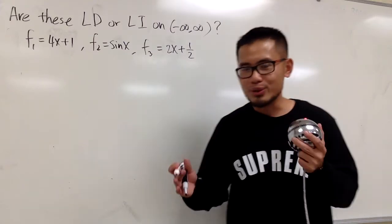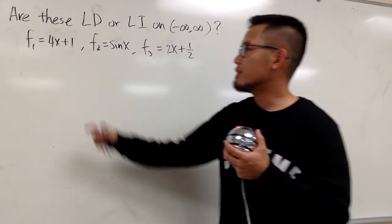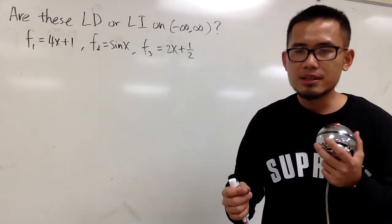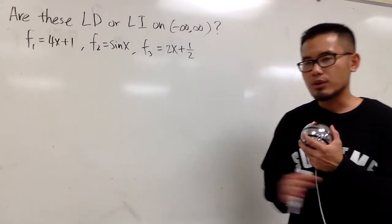And now, that's what we are going to do. Because there's actually one theorem for that. If you can find out two functions in a set that are linearly dependent, the whole thing is linearly dependent, okay? LD for the whole thing.